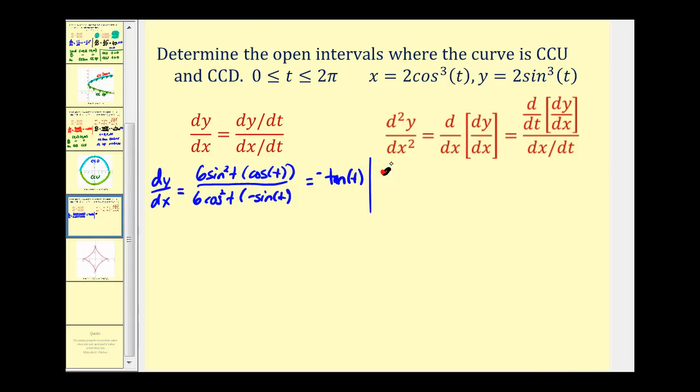Now we'll find the second derivative. So we'll find the derivative of the first derivative with respect to t, and then divide that by dx/dt. Well the derivative of tangent t is secant squared t, so this derivative will be negative secant squared t. And then we found dx/dt here, so we'll have six cosine squared t times negative sine t.